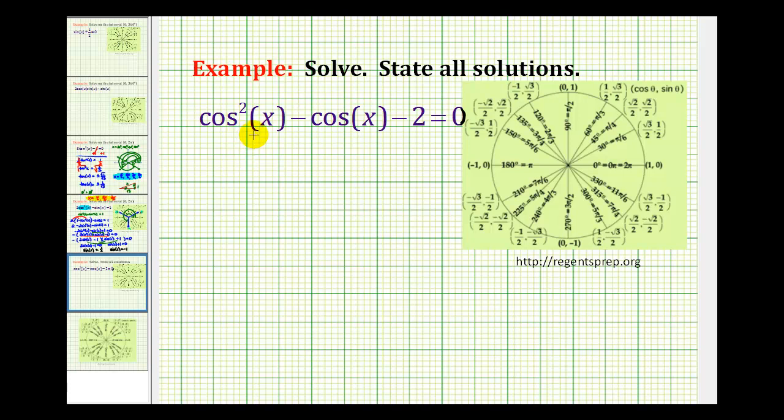Here we want to solve the trig equation cosine squared x minus cosine x minus 2 equals 0. And we're not given a specific interval, we want to state all solutions. So what we'll do is solve this equation first on the interval from 0 to 360 degrees, and then we'll write an expression from there to state all solutions.